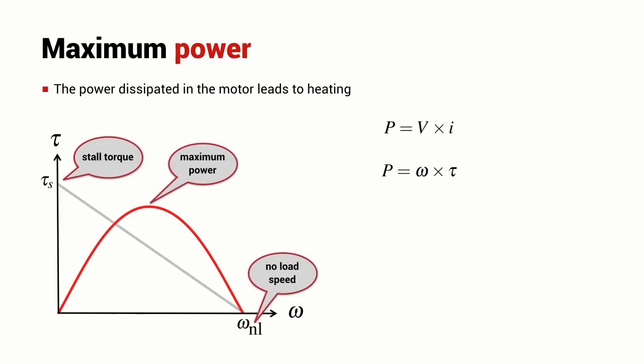Power is a quadratic function of speed. It has a maximum somewhere in the middle of the operating speed range of the motor and the motor cannot be operated for a sustained period of time above its maximum power rating else it will be damaged through overheating.